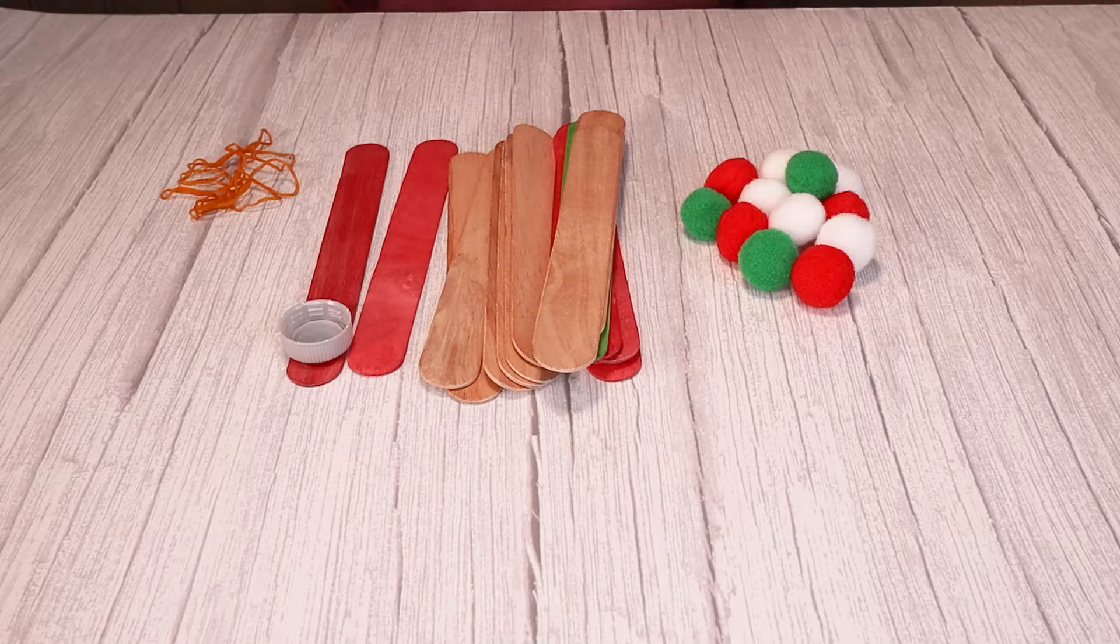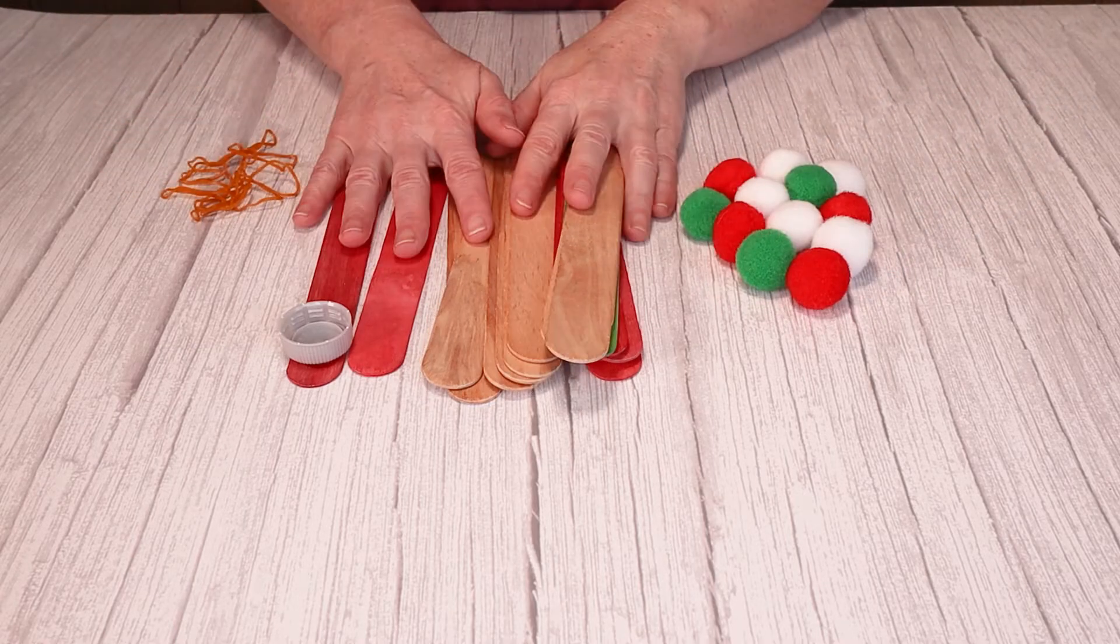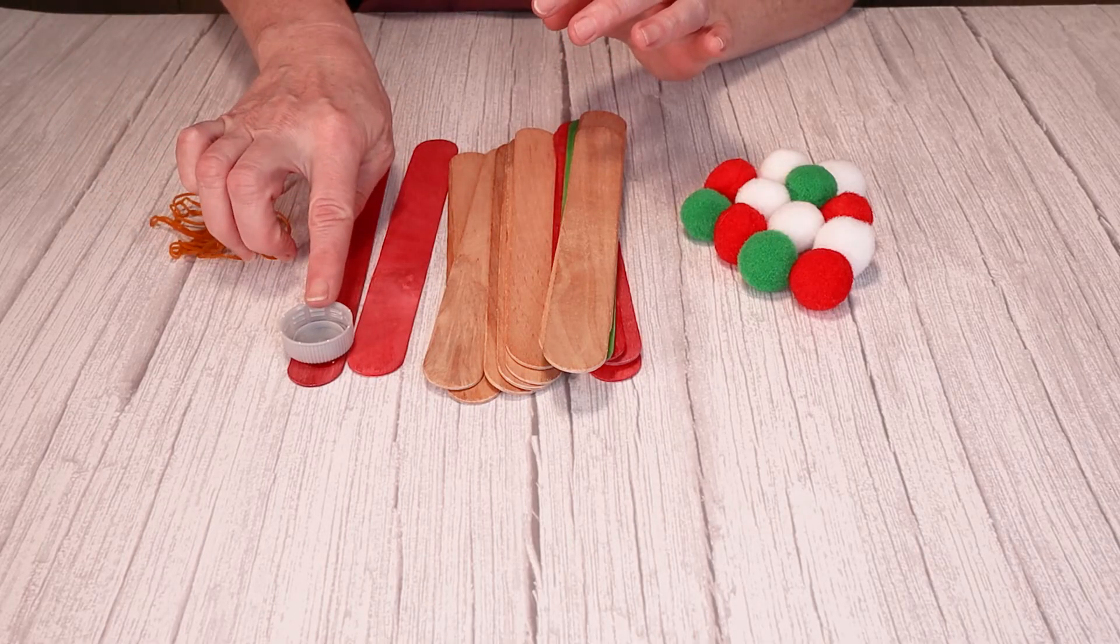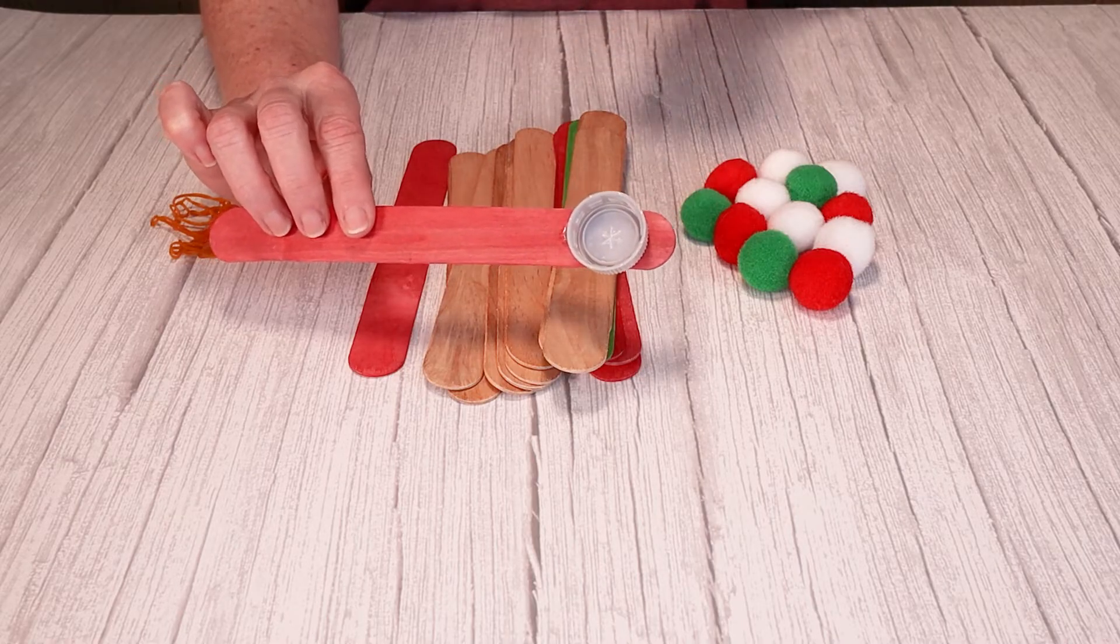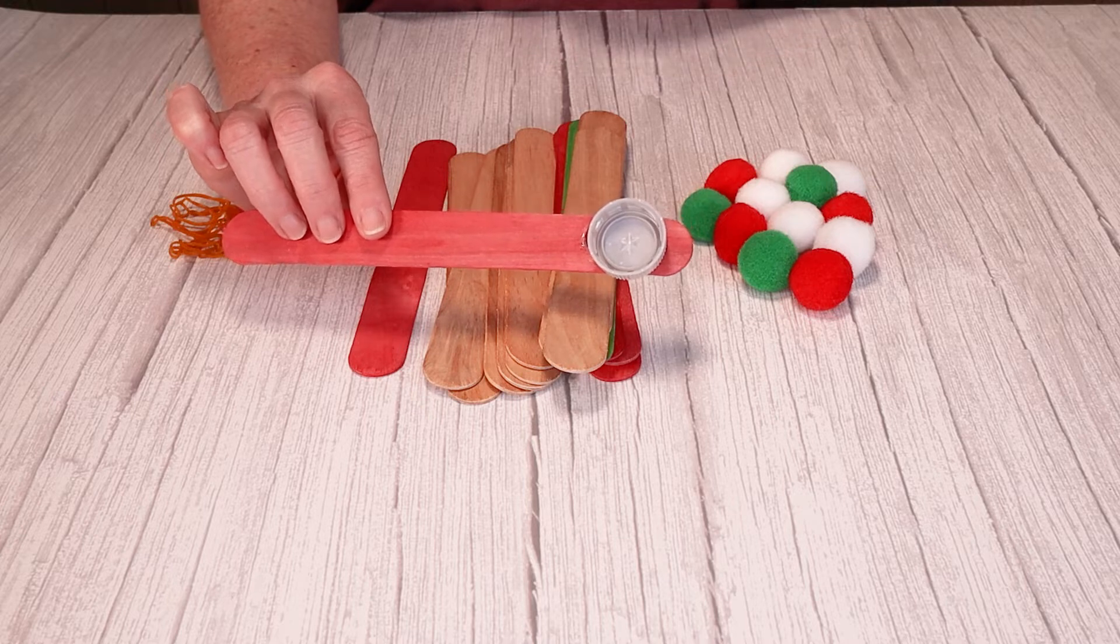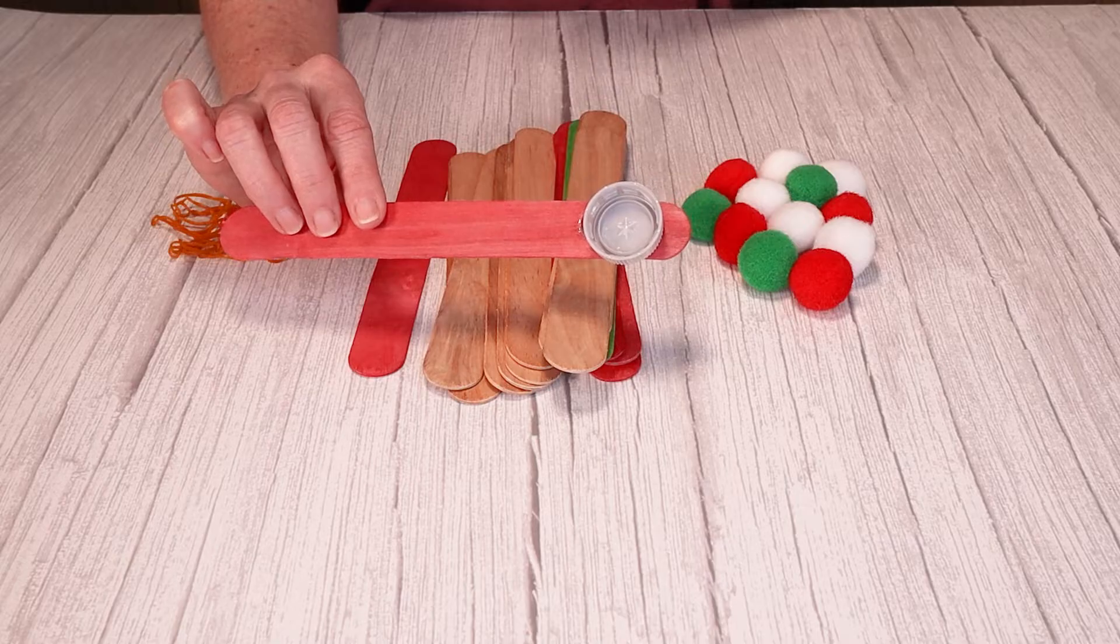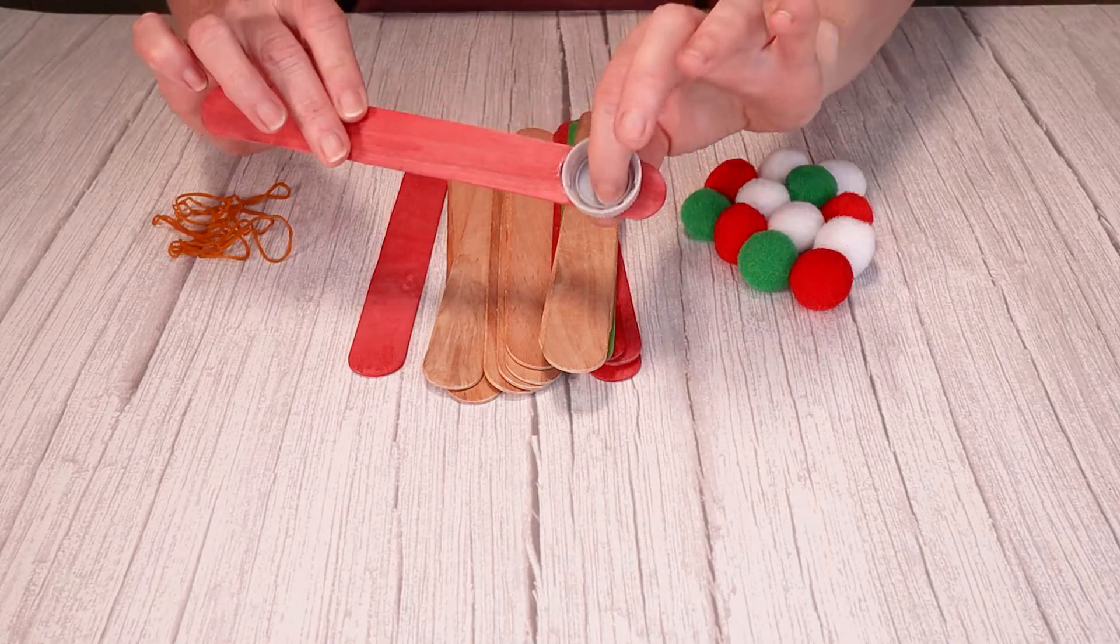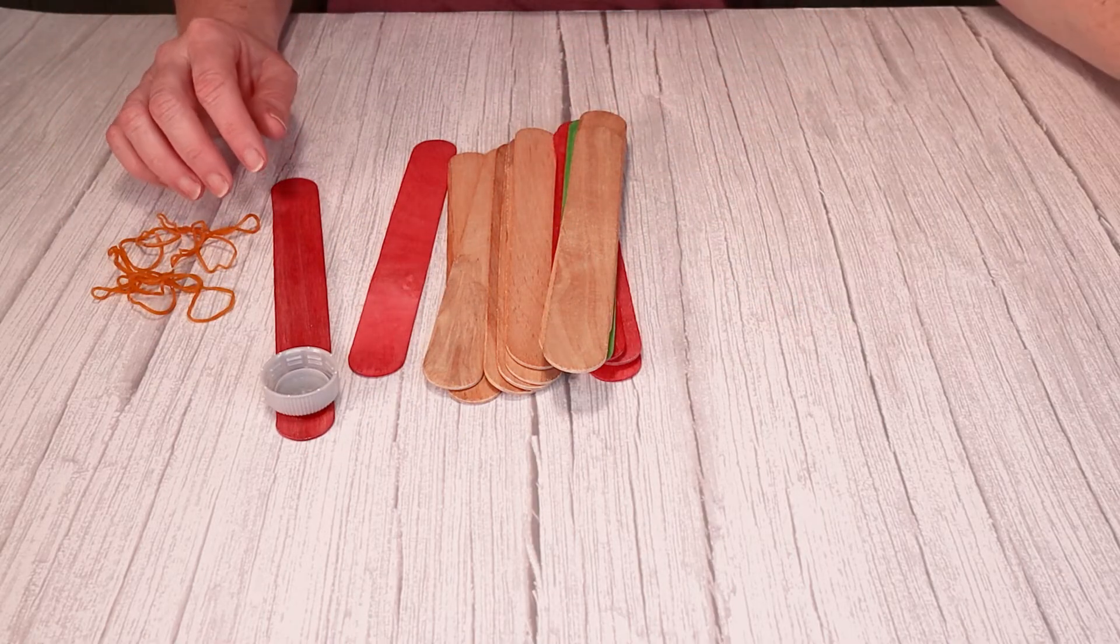This is a really easy project. All you need for this project are some pom-poms, jumbo craft sticks, elastics and then you're going to want a bottle cap or a disposable spoon, any sort of little plastic cup that you can glue onto one of your craft sticks. I recommend doing it with a hot glue gun. You can use school glue but a hot glue gun just makes it a little bit more secure if your kids get really excited when they're launching. So I've already glued mine on just for expediency here so let's build our catapults.